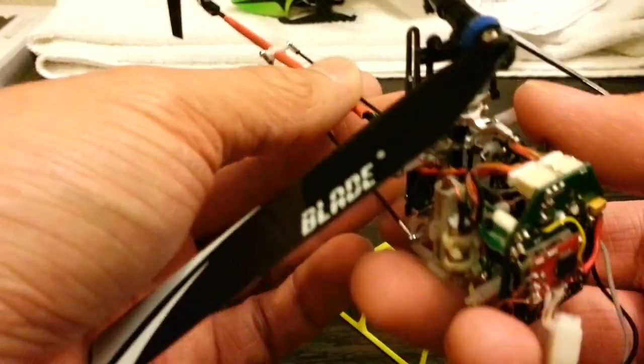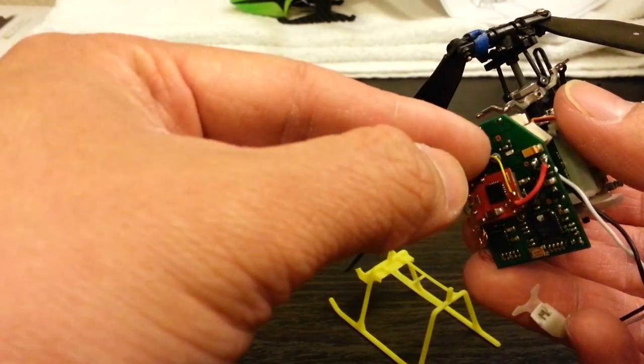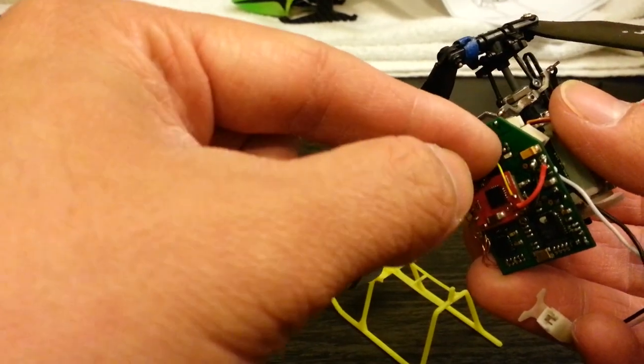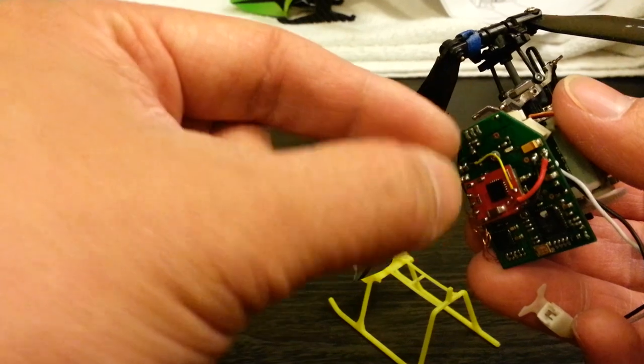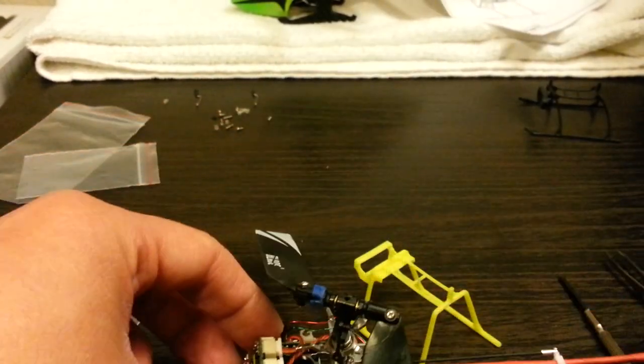One thing that this frame didn't include was the two washers when you mount the board. So make sure you don't throw away those old screws that you use to mount the board. Keep those plastic spacers. Also the manual, so manual is very easy to read.